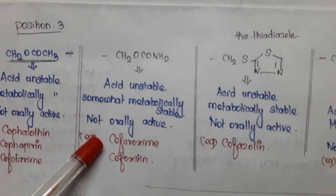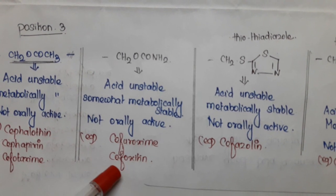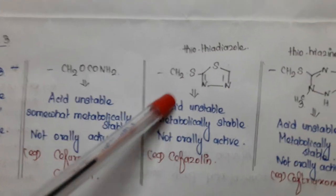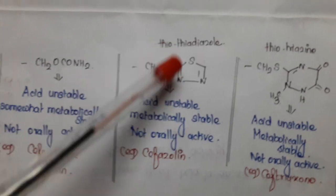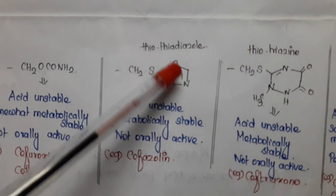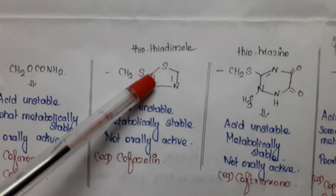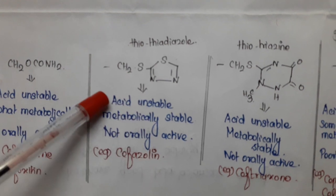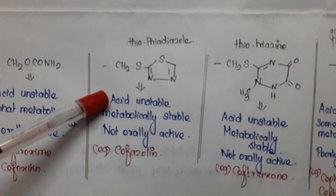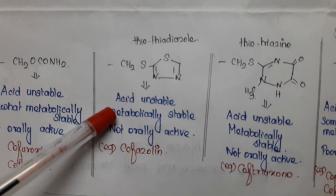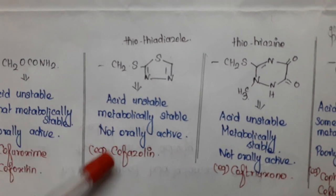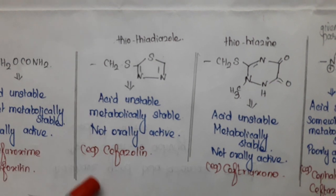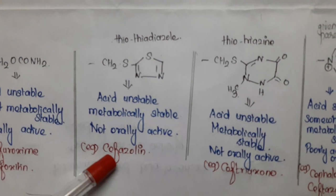If in the third portion we introduce an aminocarbonyloxymethyl group — that is CH2OCONH2 — the final compound is acid unstable and somewhat metabolically stable, and not active orally. If we introduce a thiothiadiazole group in the third portion, the compound is acid unstable, metabolically stable, and not active orally.